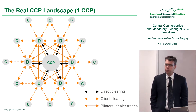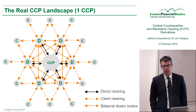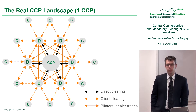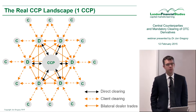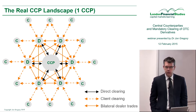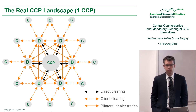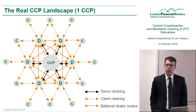In reality it looks a bit more complex than I just represented, and for a number of reasons. As you can see on this diagram here, reason number one: not everything can be cleared, as I already said. So there will still be bilateral trades — shown as the solid red lines — and of course there are cleared trades as well.